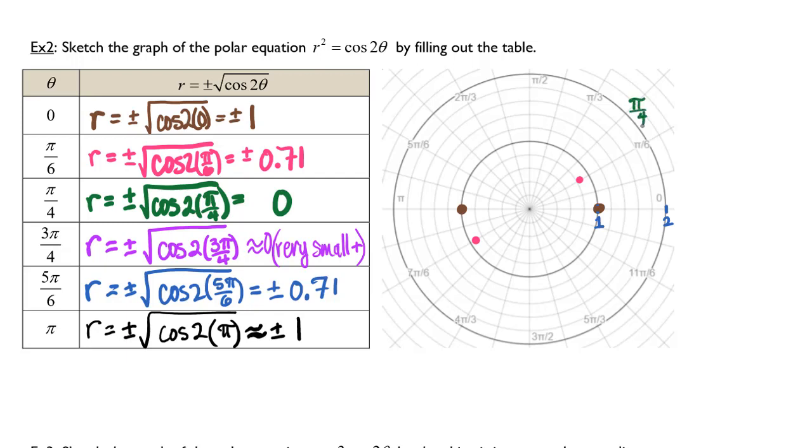At pi over 4, my radius is at 0 and 0. So right in the middle.